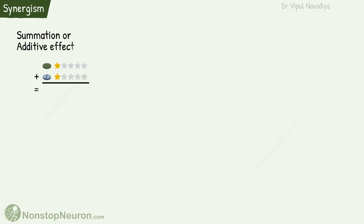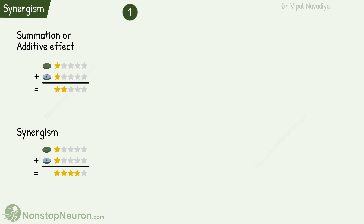Now synergism. In the previous two mechanisms, the combined effects were equal to the algebraic sum of individual effects. But in synergism, the combined effect is more than the algebraic sum of individual effects. This can be achieved by two mechanisms. The first mechanism is sequential block, where both drugs act on different steps of the same biochemical pathway.